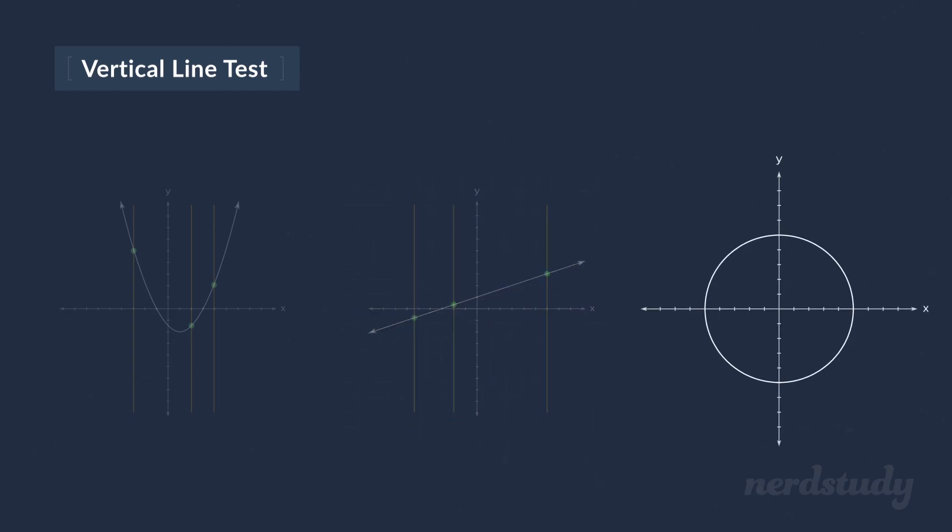But what about this last one here? Well, we see that the graph is a circle. And if we use the vertical line test, we can see that although at these two endpoints the vertical line only hits one point at a time, every other line drawn within the circle would be hitting two points. Therefore, we can conclude that this graph here is not a function.